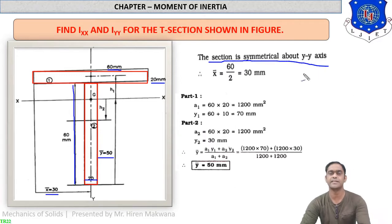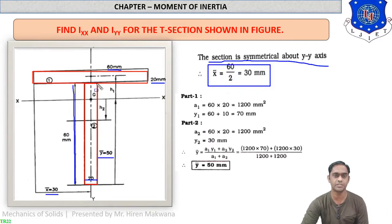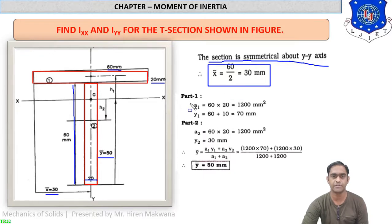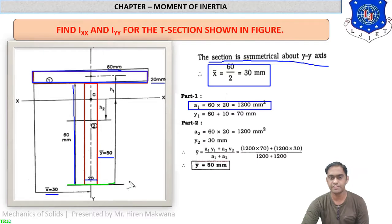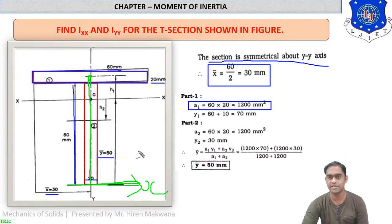As the section is symmetrical about the Y-axis, we can say x-bar equals 60 divided by 2, which equals 30 mm — that is, total width divided by 2. For part 1, the area a1 equals 60 into 20, which is 1200 mm squared. For y1, taking reference from the bottom axis (X-axis), the CG of part 1 is at 10 mm plus 60 mm, so y1 equals 70 mm.